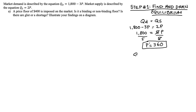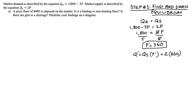I'm going to use the supply function because it's easiest. Our equilibrium quantity Q* is equal to the quantity supplied evaluated at p*. Quantity supplied is Qs = 2p, so Q* = 2 × 360 = 720.